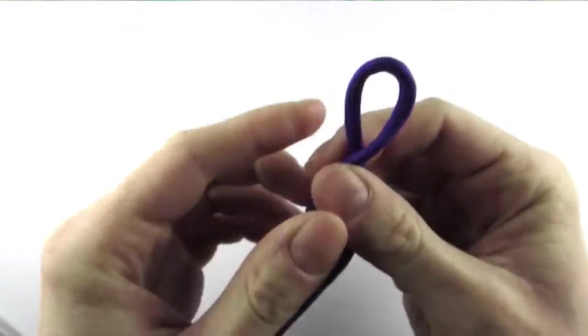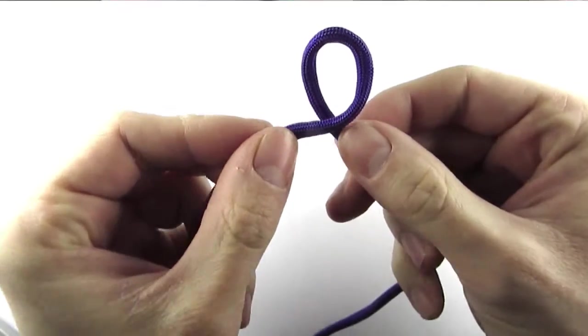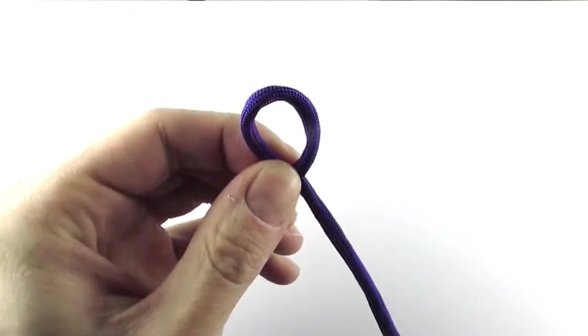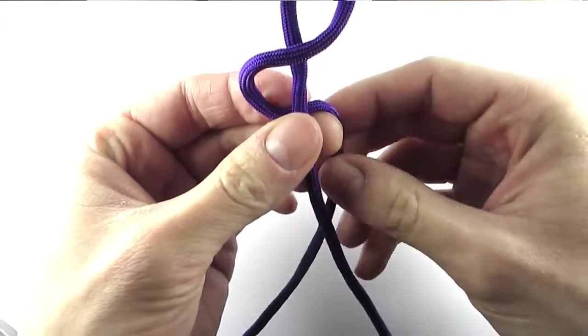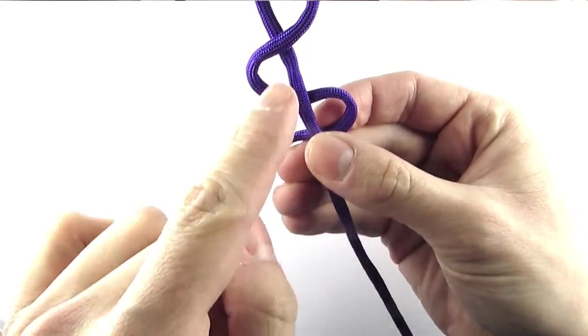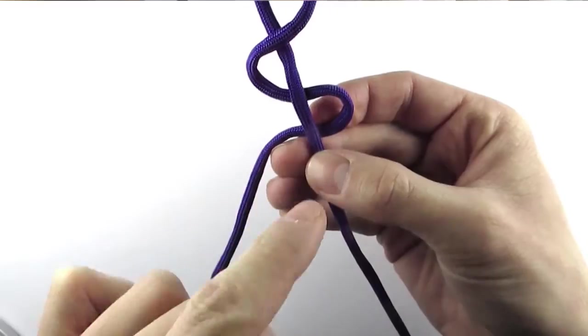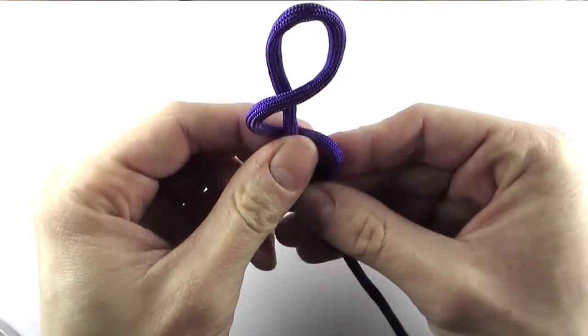Take a piece of paracord and make a loop. Pass the left cord behind the right one like this, which is the starting position for the cross knot.